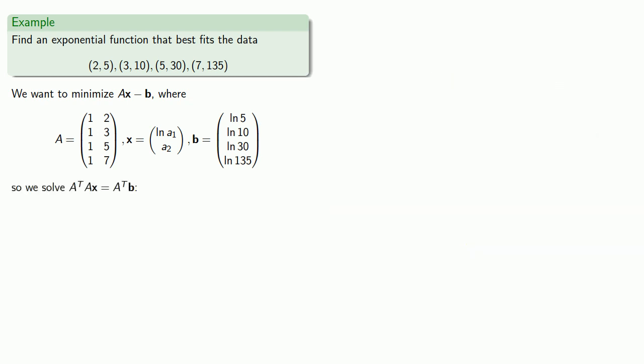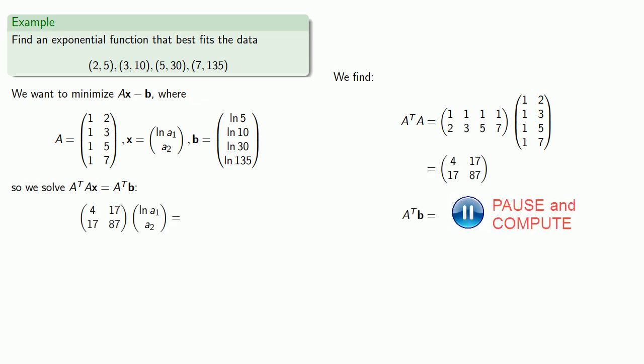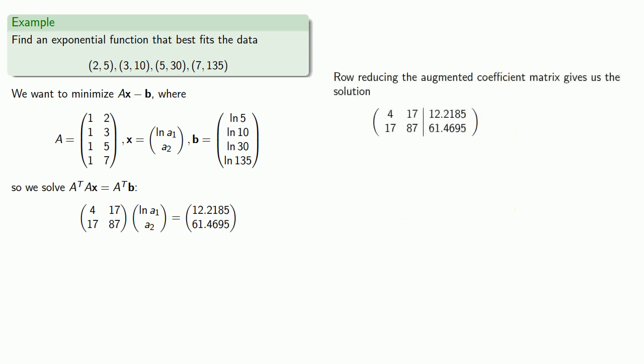And we want to solve A transpose AX equals A transpose B. So let's find A transpose A, A transpose B. And let's row reduce the augmented coefficient matrix, which will give us the solution.